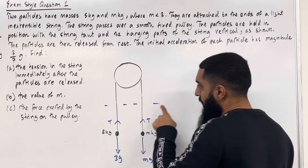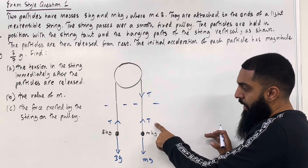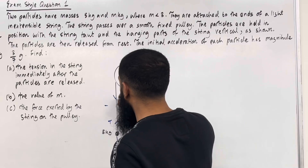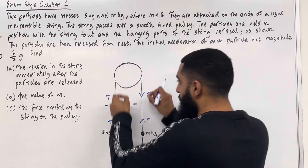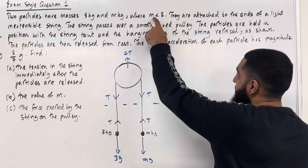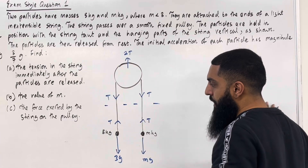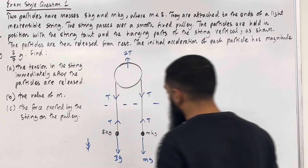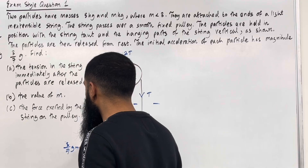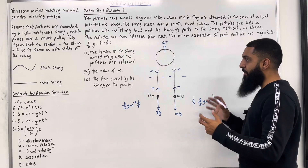Moving on to the pulley: we have the tension acting vertically downwards, which is T. This is due to Newton's third law — for every action there is an equal but opposite reaction. The force exerted by the string on the pulley acts vertically upwards and is two lots of the tension T. Now, since m is less than 3, the 3 kg particle is heavier, so the 3 kg particle will accelerate downwards at 3/7 g m/s², and the m kg particle will accelerate upwards at 3/7 g m/s². This completes the force diagram.